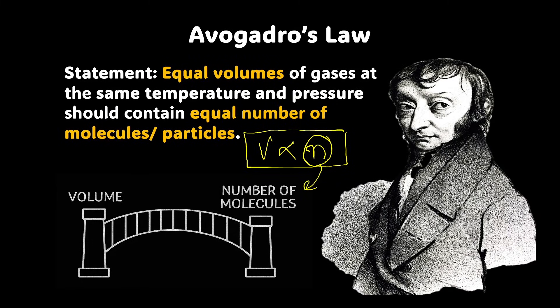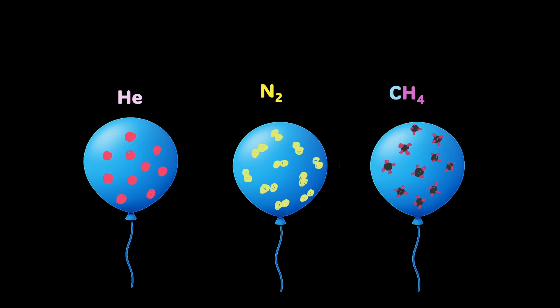Now, let's unpack this with this example. Imagine what we have here are three identical balloons. One is filled with helium, which is a monoatomic gas. The other one is filled with nitrogen, which is a diatomic gas. And the third one is filled with methane, which is a pentatomic gas, as there are one, two, three, four, five atoms.